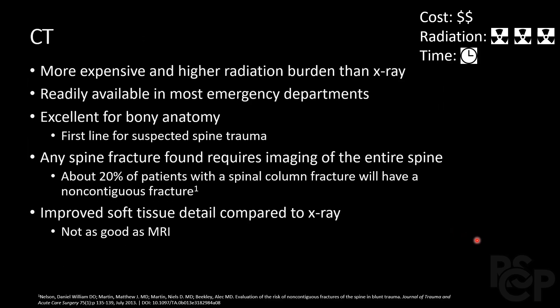CT is the gold standard for evaluation of bony anatomy and is first-line for suspected spine trauma. It is more costly and has a higher radiation burden than x-ray, but takes roughly the same amount of time. It is available in most if not all emergency departments. It has improved soft tissue detail compared to x-ray but is outperformed by MRI. If you find a single spine fracture anywhere in the spine, that is an indication to scan the rest of the spine.